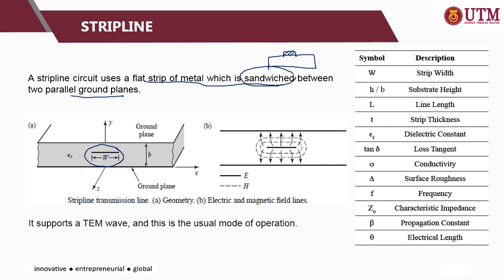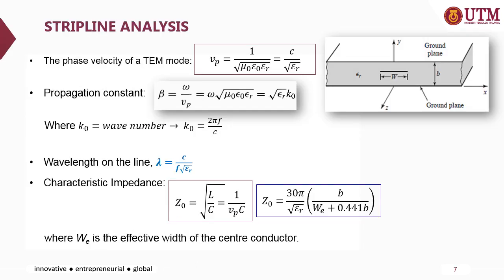To revise: the strip line supports TEM wave — TEM mode — and this is the common mode of operation for strip line. We can calculate the phase velocity Vp for the TEM mode using the equation where C is the speed of light and epsilon_r is the relative permittivity of the dielectric material in which the strip line is sandwiched between two parallel metal ground planes.